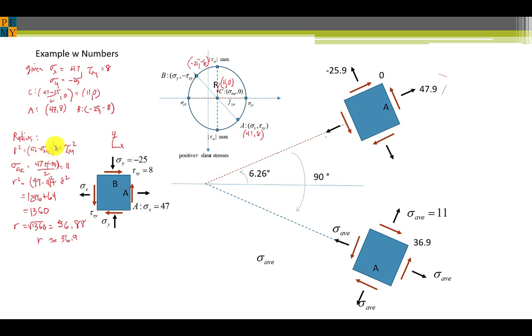After that we need to get the radius of the circle so recall that that was sigma x minus sigma average squared plus tau xy squared equal to the radius squared. The sigma average is 47 plus the negative 25 divided by 2 which were these two components averaged and that was 11. So if we do the arithmetic, take the 47 minus 11 squared plus the shearing stress squared, we end up with 1360.